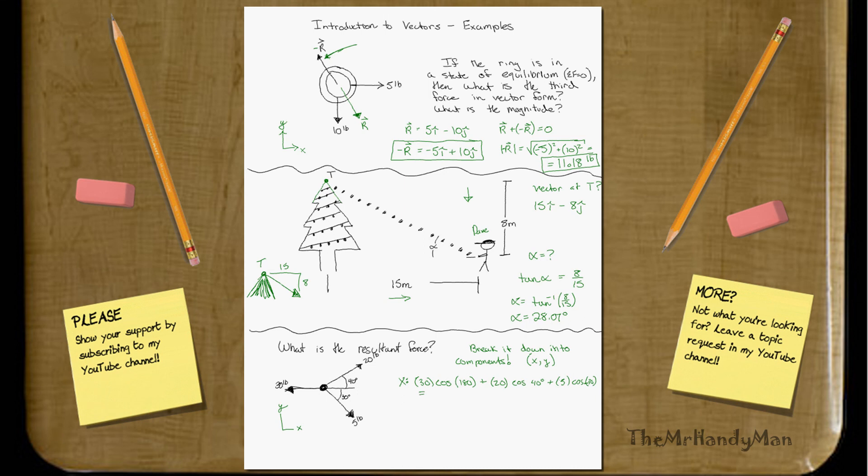Well, if you figured all that out, it would be negative 30, plus 15.32, and plus 4.33. Which, all comes down to negative 10.35-ish. Okay, well, that's the x direction. What about the y?